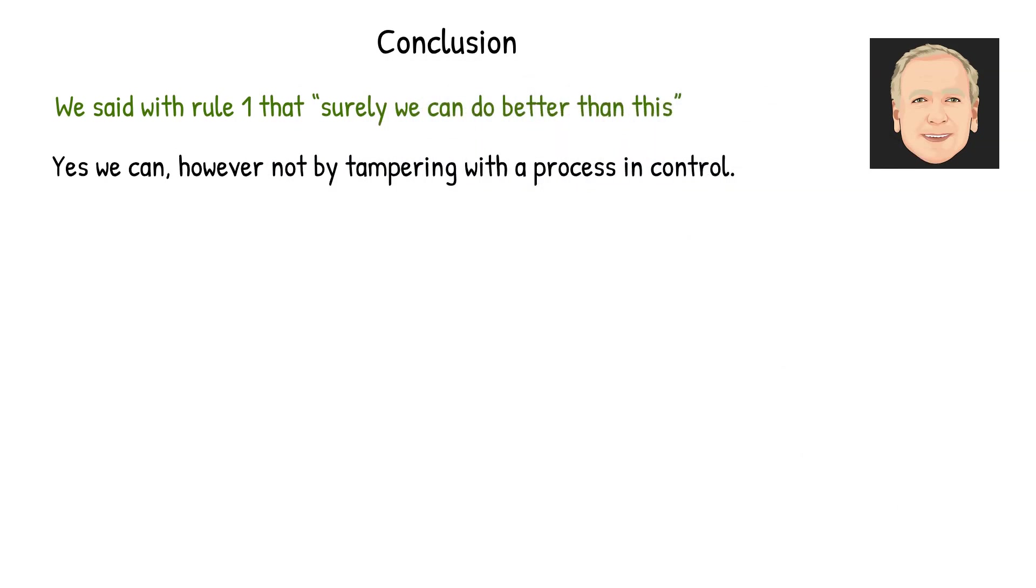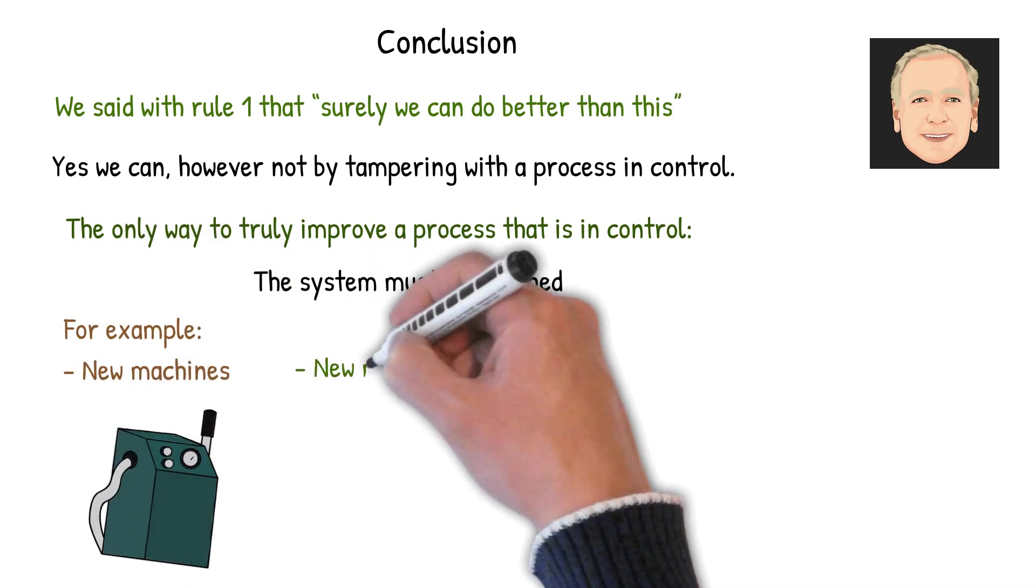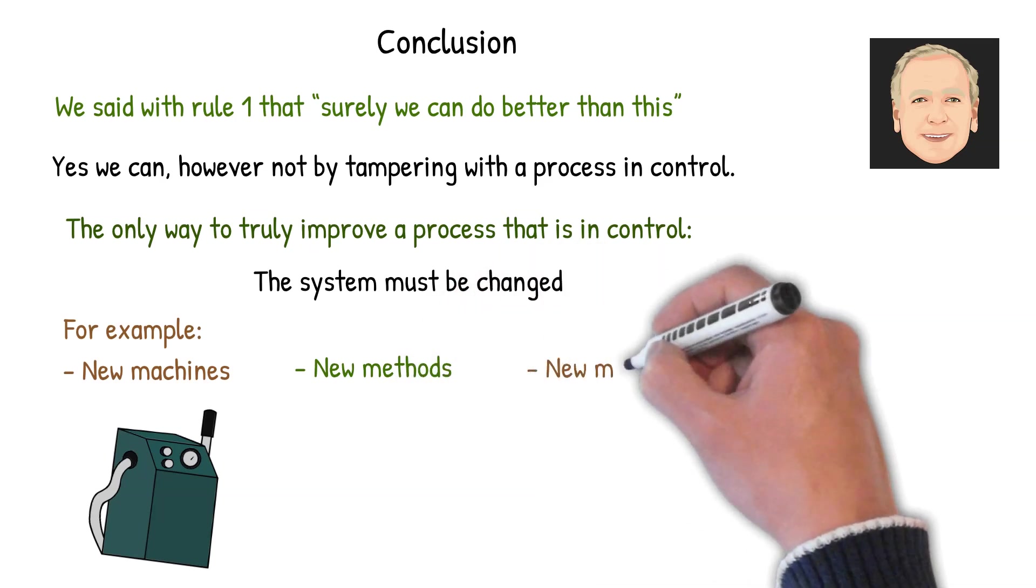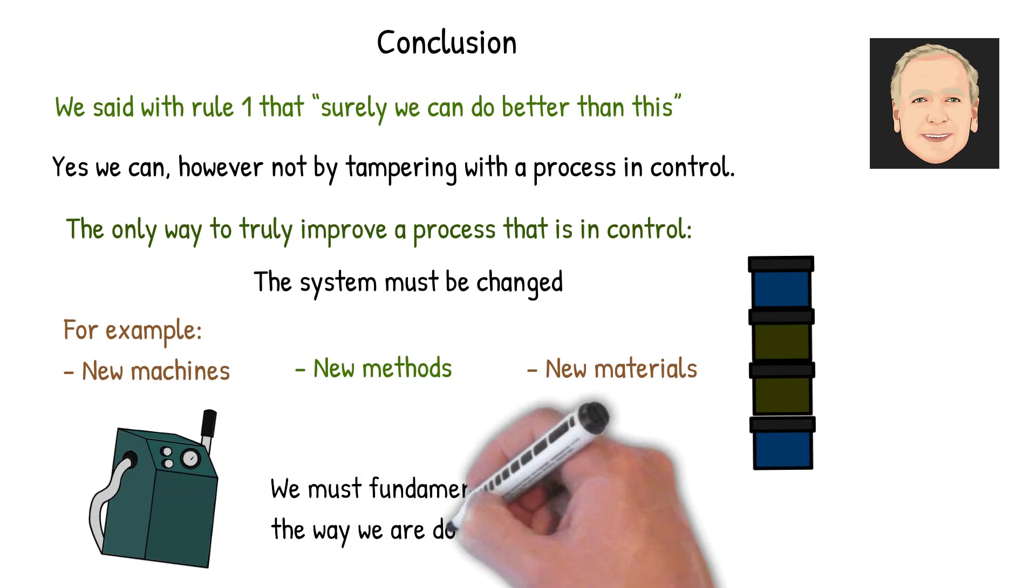So conclusion. We said with rule one that surely we can do better than this. Yes we can, however not by tampering with a process that's in control. The only way to truly improve a process that's in control is the system must be changed. For example: new machines, new methods, new materials. But the process has to be fundamentally changed. And that's management's responsibility.